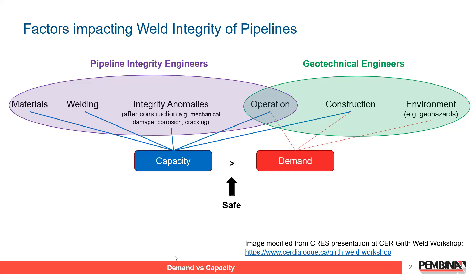Girth welds are discontinuities that join one stick of pipe to the next stick of pipe. They occur at wall thickness changes, variations in pipe grade, and with the presence of integrity features — cracks, deformations, corrosion. Each girth weld can experience a different percentage of stress based on the hydraulic profile, as well as different operating pressures and cyclic loading. A pipe is not a pipe is not a pipe. Each pipeline has its own characteristics.